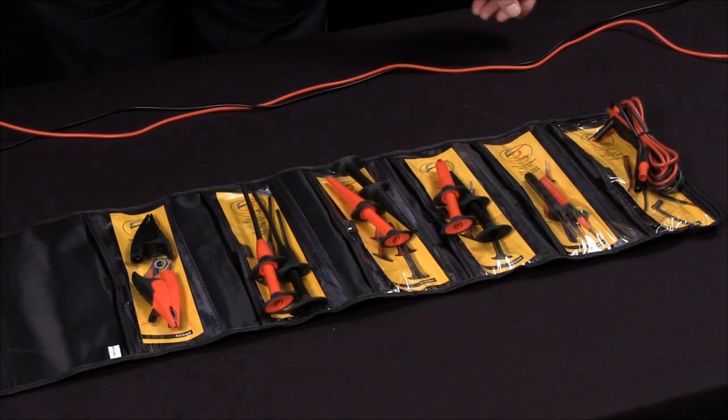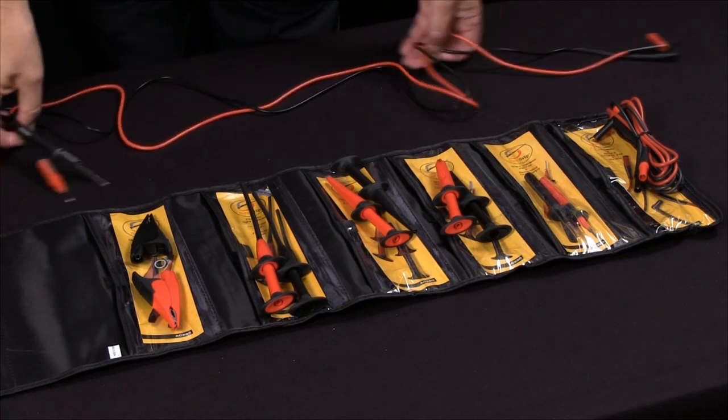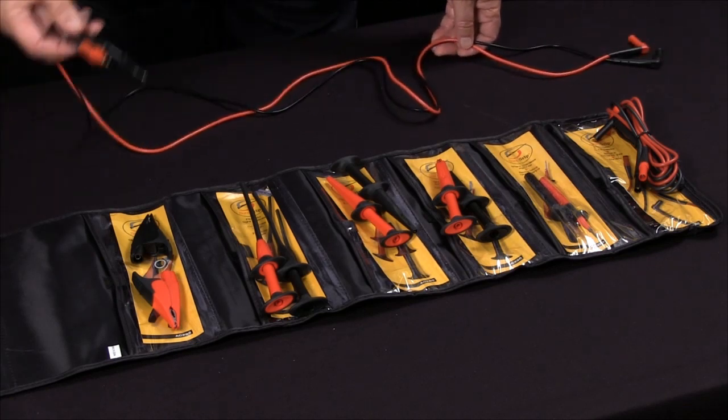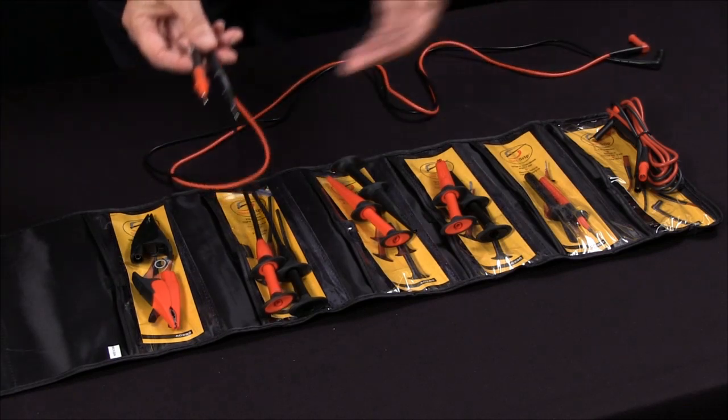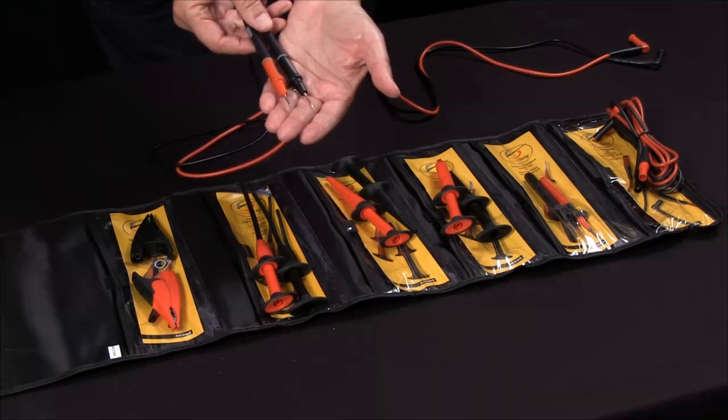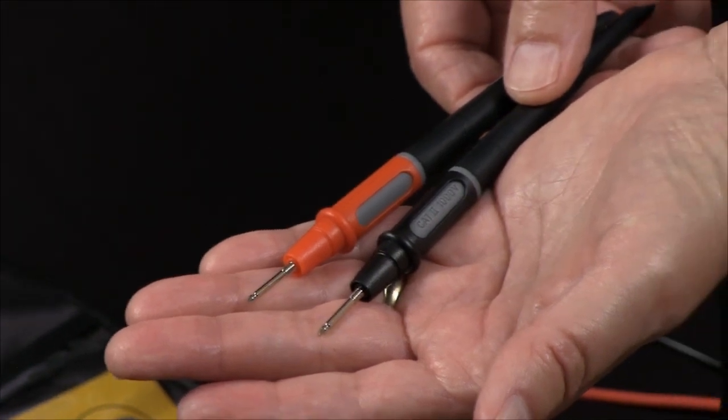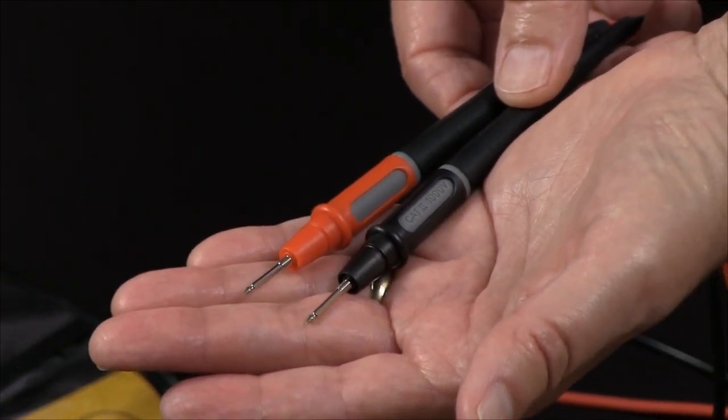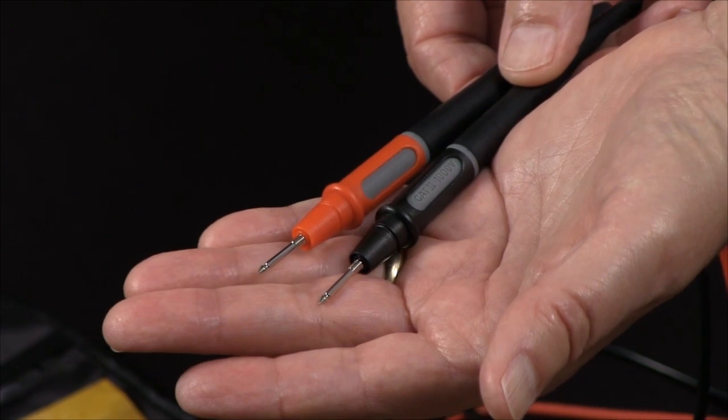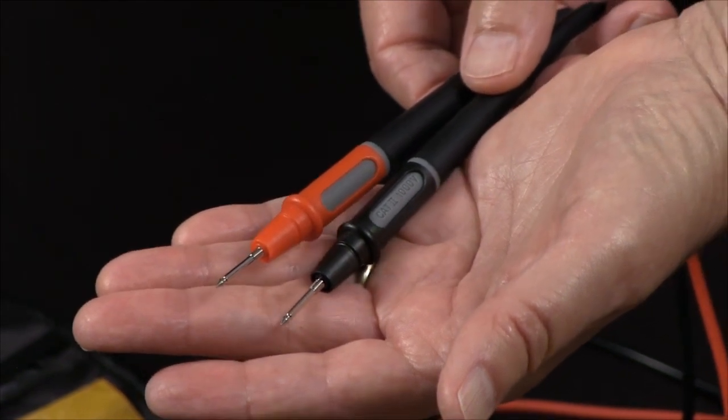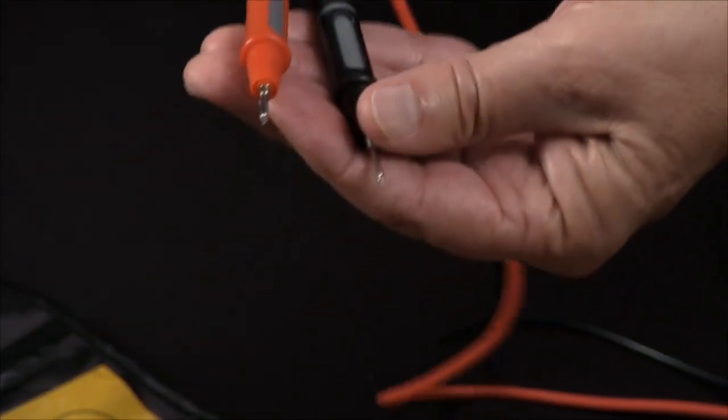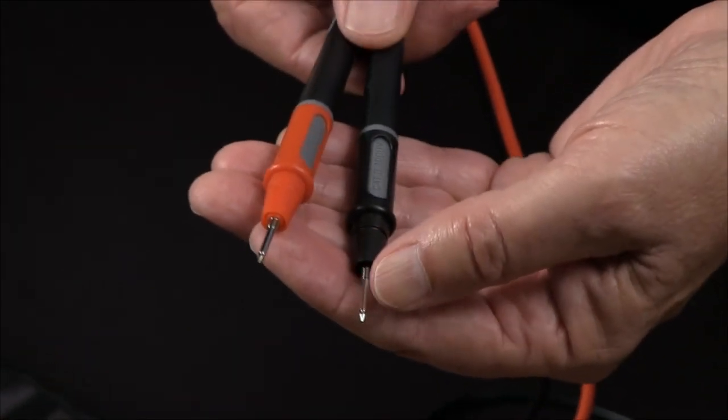Another new innovation in test leads is the TL175. It has the traditional probe tips where you have quite a bit of exposed metal for probing in different applications like sockets. But when you get into a high energy electrical situation, you need something with less exposed metal. In this configuration, these probes are rated Category 2, 1000 volts.